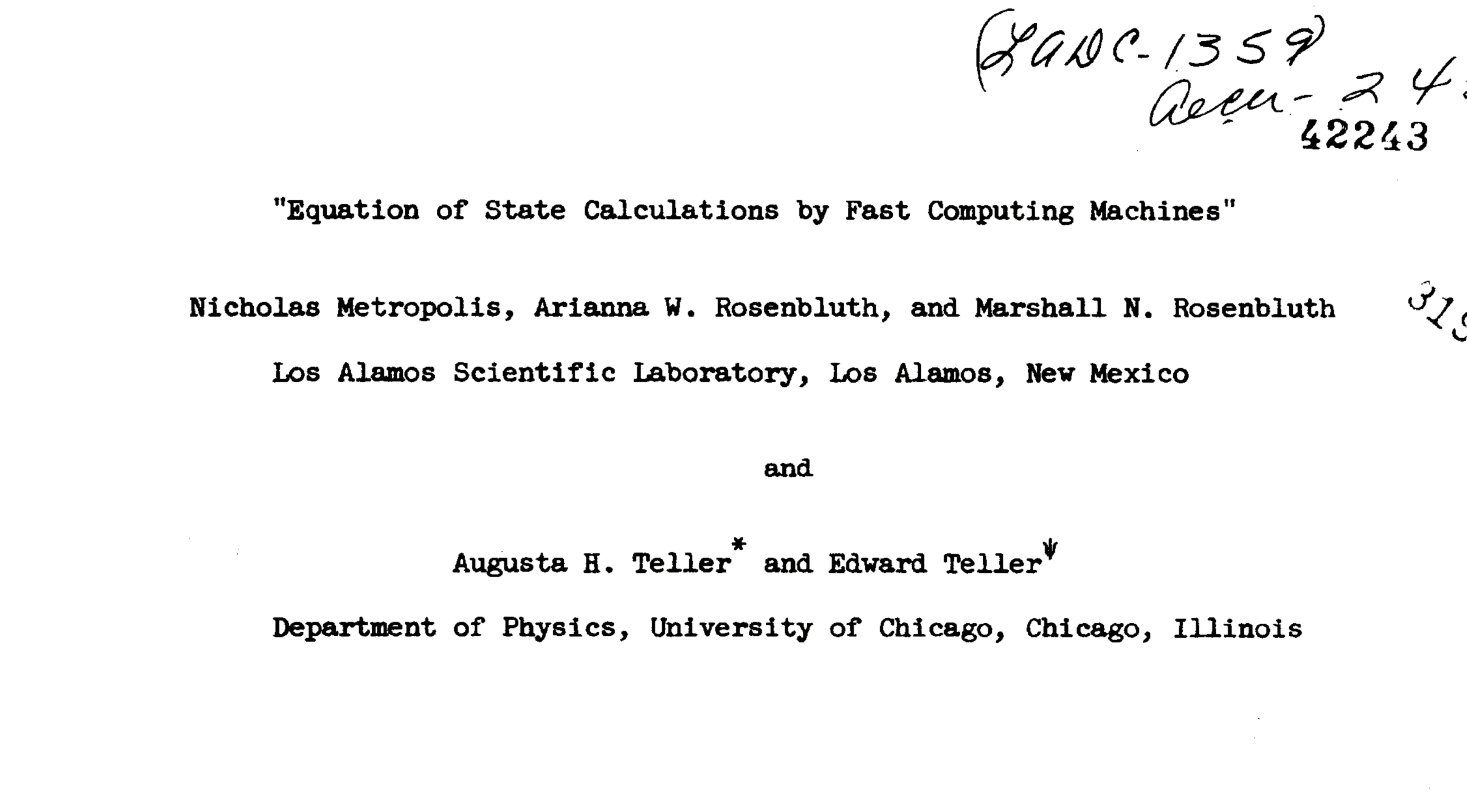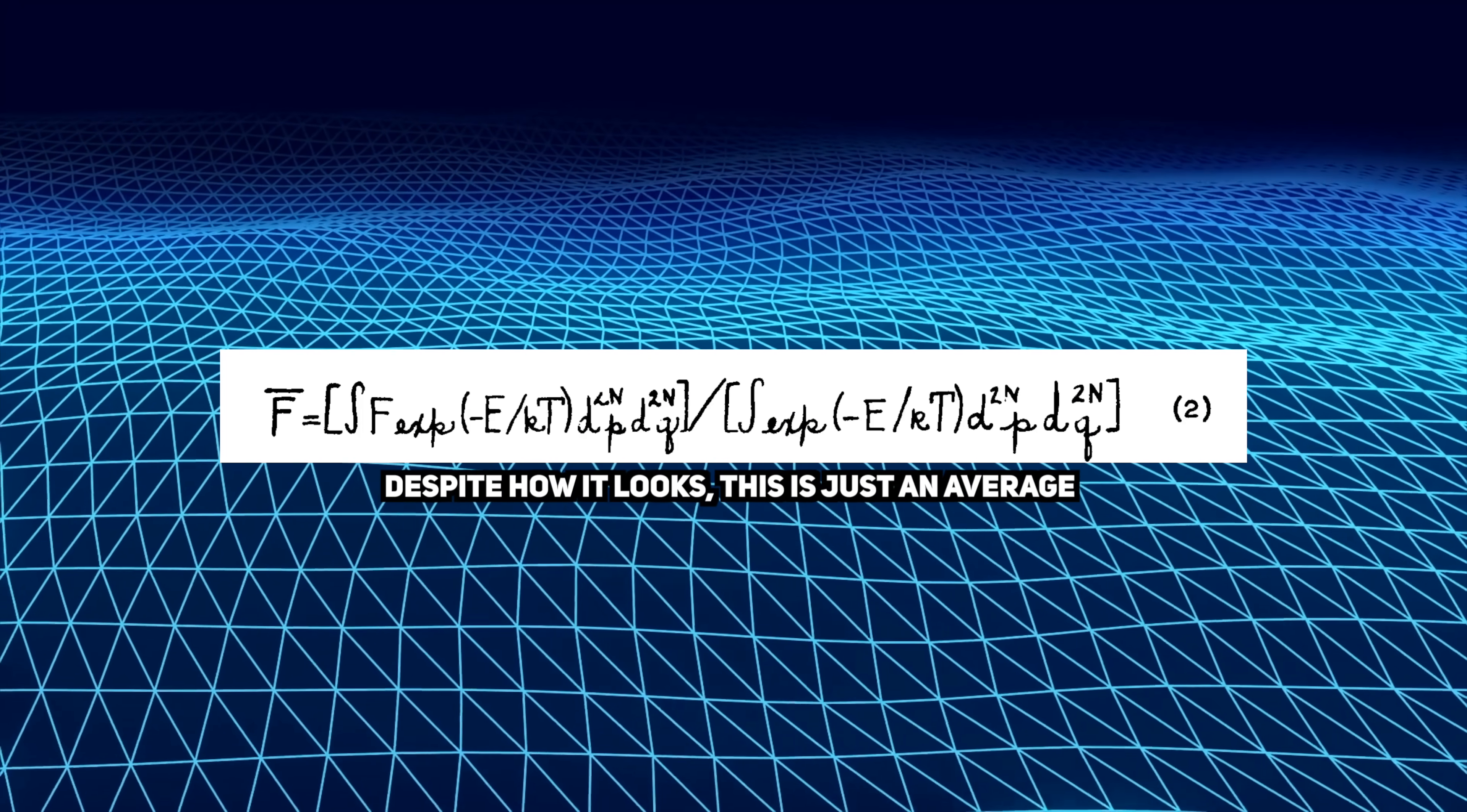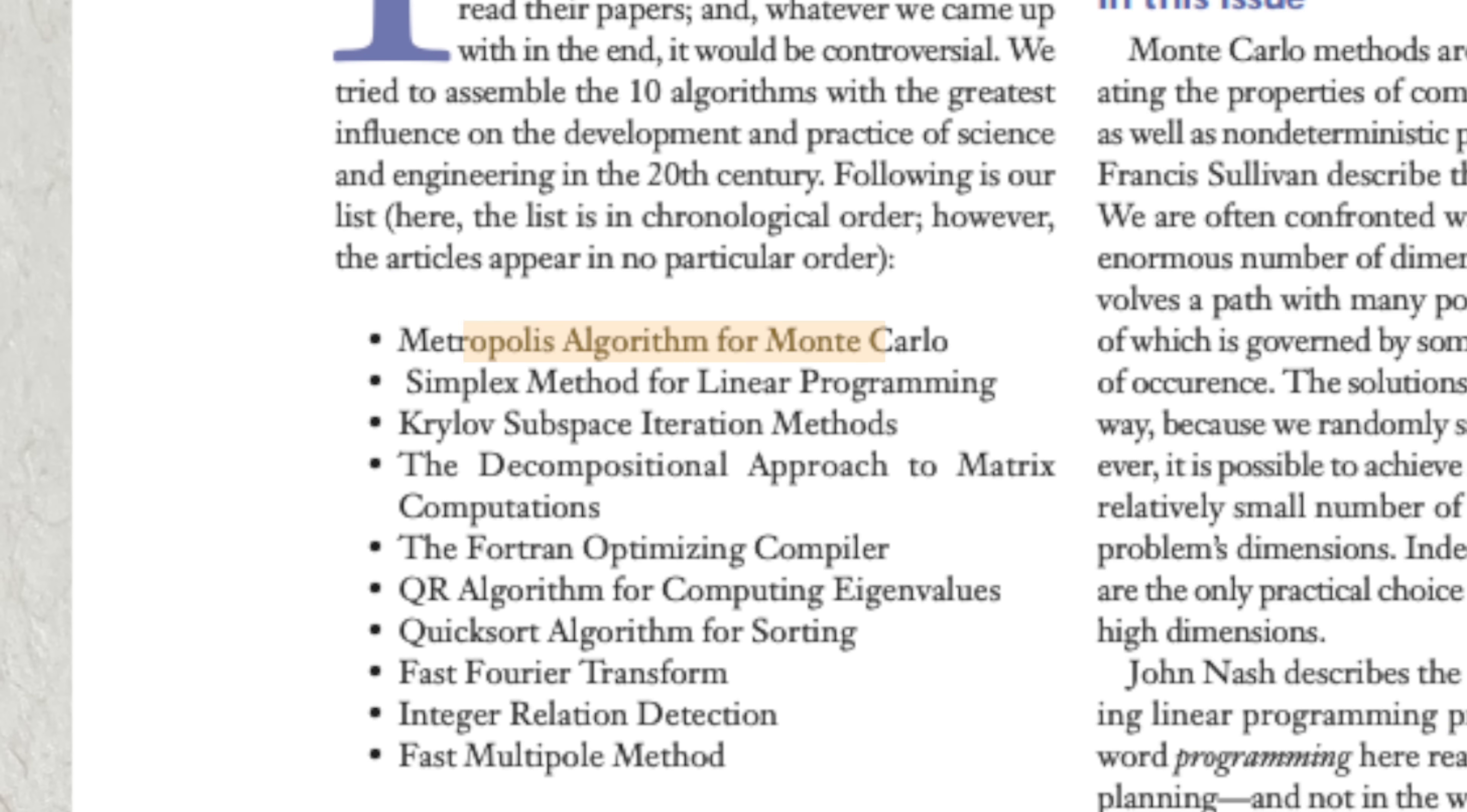In 1953, a short paper called Equations of State Calculations by Fast Computing Machines was published in the Journal of Chemical Physics. The paper developed a new algorithm for quickly calculating important physical properties based off the Monte Carlo Method. Unbeknownst to the paper's authors, they had produced an algorithm that would go on to become one of the most important algorithms of the 20th century. This algorithm is now known as the Metropolis Algorithm.